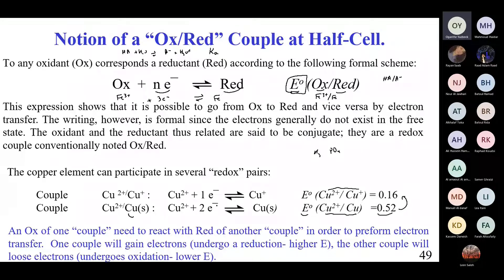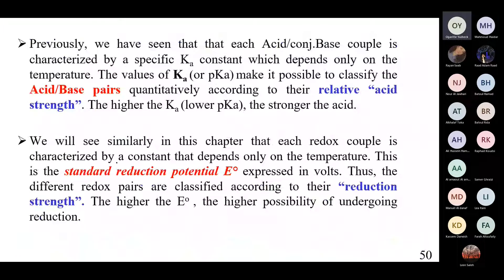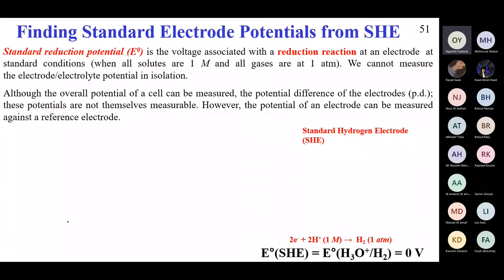Just as the value of Ka lets you classify the strength of acid-base pairs, we have standard reduction potentials where we can measure reduction strength. The higher the E-naught, the higher the possibility of undergoing reduction. Higher Ka corresponds to a stronger acid; similarly, a higher standard reduction potential corresponds to a greater tendency to be reduced.